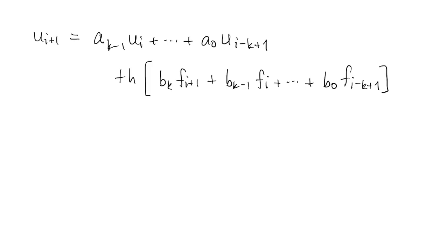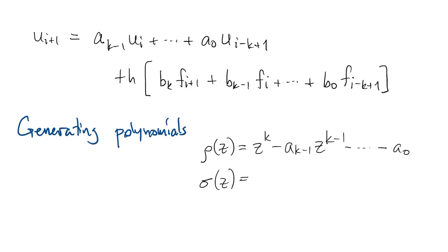Here again is our general multi-step formula. It's quite cumbersome to write out every single time. So we do have a shorthand. They're called the generating polynomials of the method. We use the a constants to define a polynomial rho of z, and we use the b constants in the formula to define another polynomial, sigma of z.